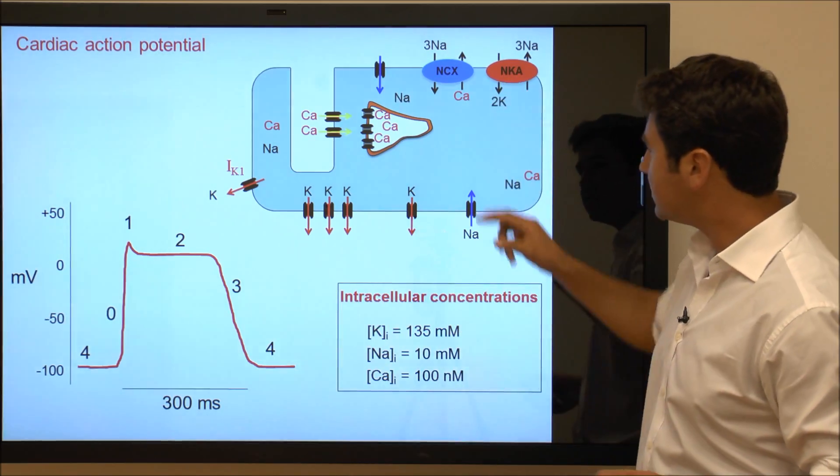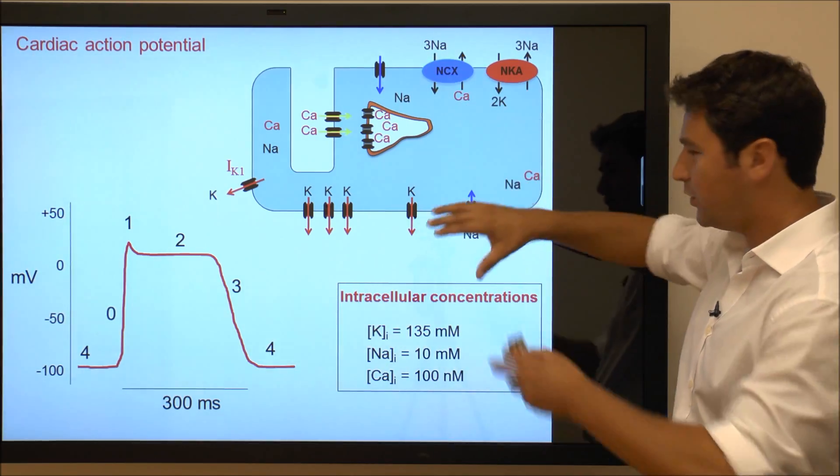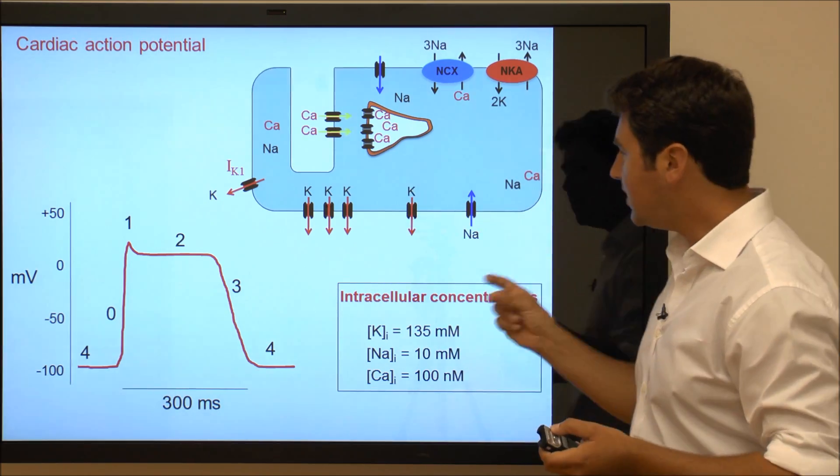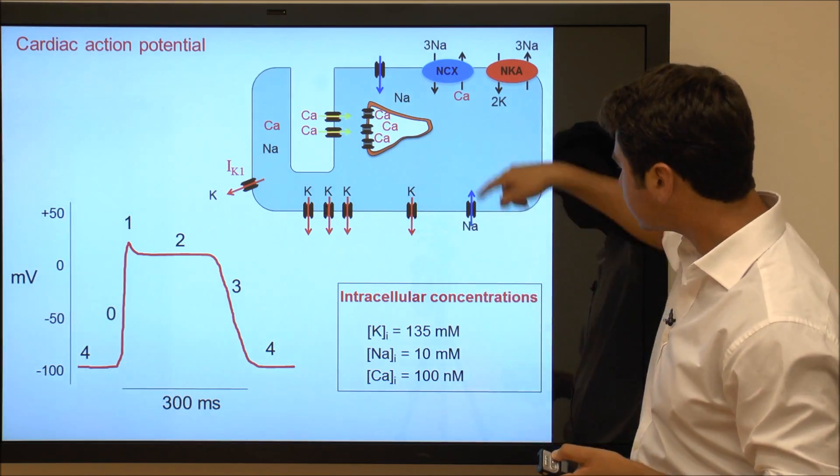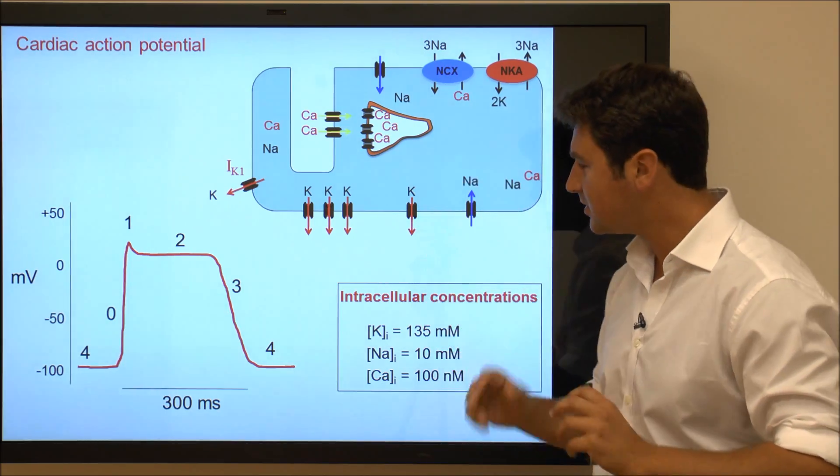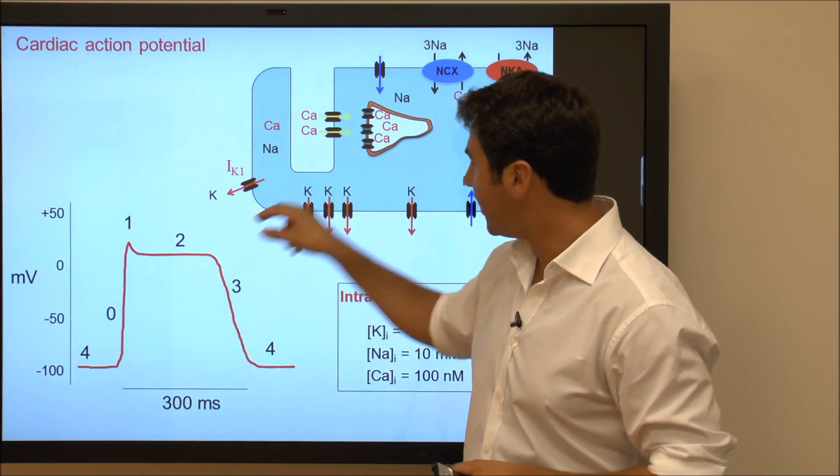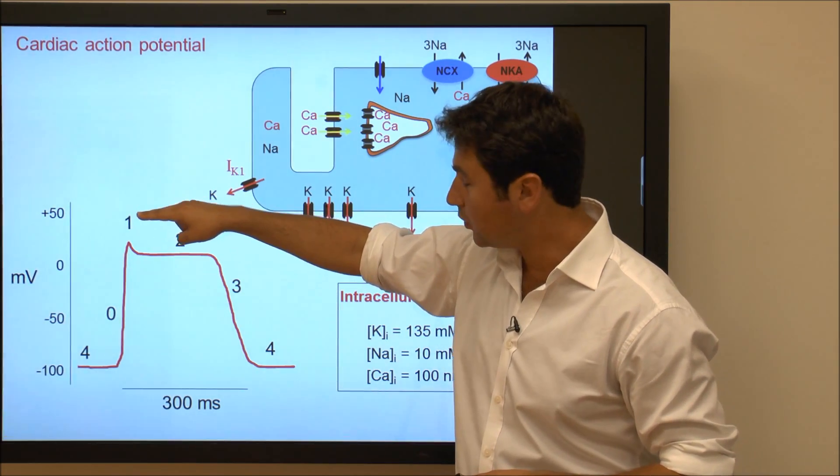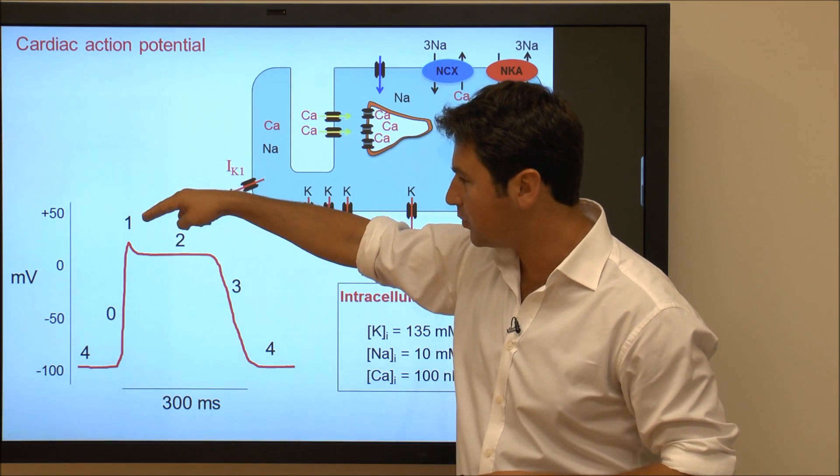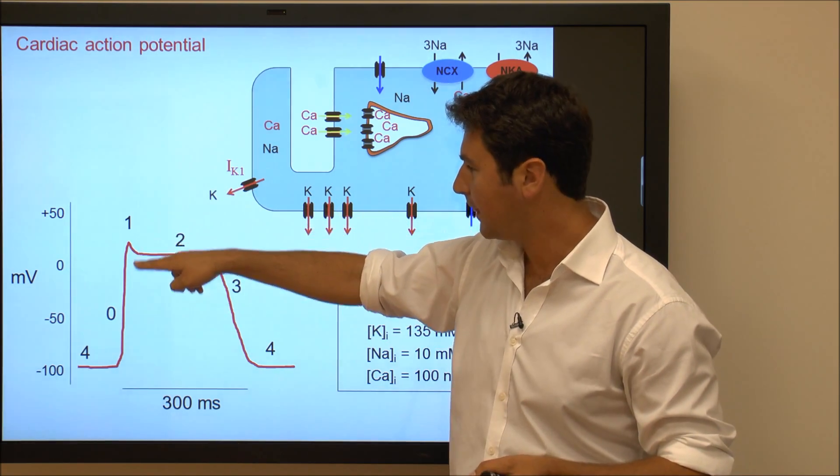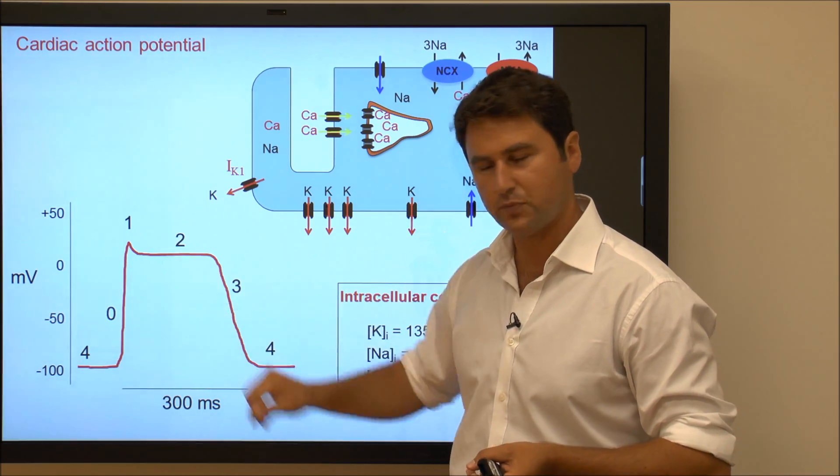What this means is that sodium channels, which are present throughout the cardiac myocyte and there's lots of them, immediately get activated. So sodium floods into the cardiac myocyte, making it very positively charged, so your membrane potential or action potential shoots up from minus 70 to around plus 20 to plus 30 millivolts. So this is your phase zero of your action potential.